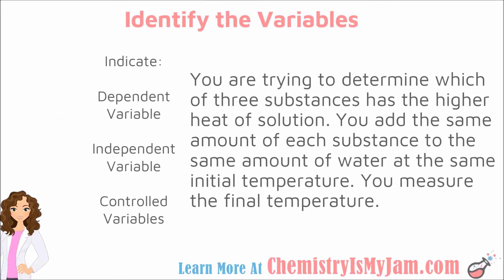Let's look at a scenario where we are going to identify the dependent variable, the independent variable, and any controlled variables that are present. You are trying to determine which of three substances has the higher heat of solution. You add the same amount of each substance to the same amount of water at the same initial temperature, and you measure the final temperature. So what is it that you are trying to study? You are trying to determine which of the three substances has the higher heat of solution. So the thing that is being intentionally changed — the independent variable — is the three substances.